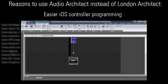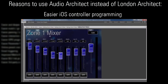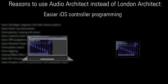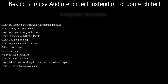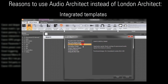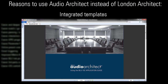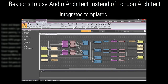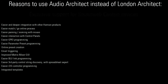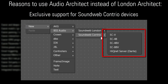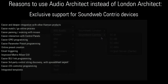It's also easier to set up iPads and iPhones as controllers, because you no longer need to export and import raw data between two software applications. There are now factory-supplied templates integrated into the software, which you can use to get up and running very quickly. And SoundWeb Contrio devices are the first example of a BSS audio product supported only within Audio Architect, not London Architect — and that will be the trend going forward.